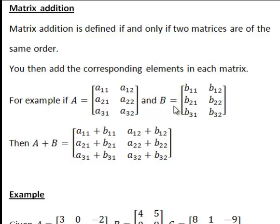For example, here two matrices are shown, A and B, where both of these have three rows and two columns, meaning that these are both order 3 by 2 for instance.